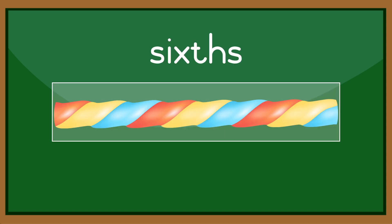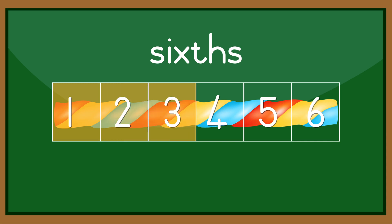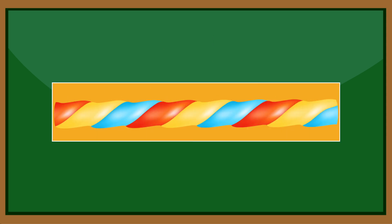In this example, the whole is divided into six parts. Those parts are called sixths. One sixth, two sixths, three sixths, four sixths, five sixths, six sixths, which equal a whole.